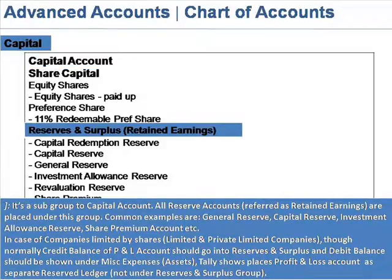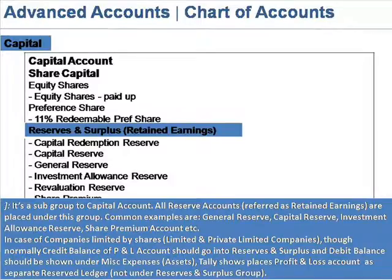Reserves and surplus, that is retained earnings, is a subgroup of the capital account. All reserve accounts referred to as retained earnings are placed under this group. Common examples are general reserve, capital reserve, investment allowance reserve, share premium account, etc.